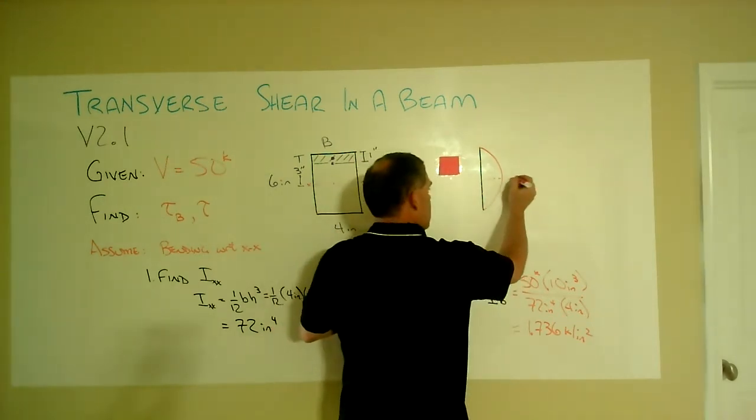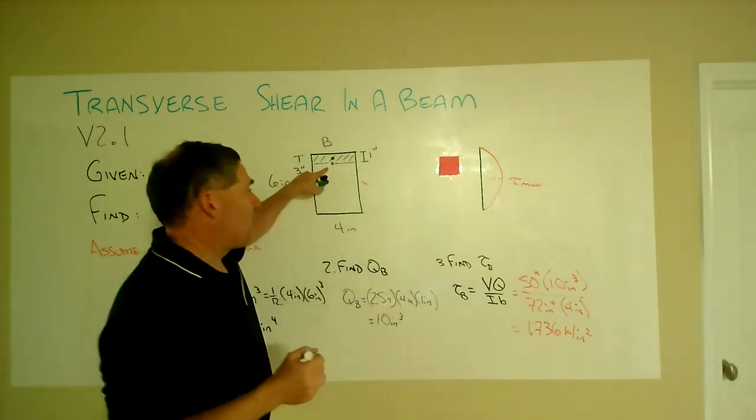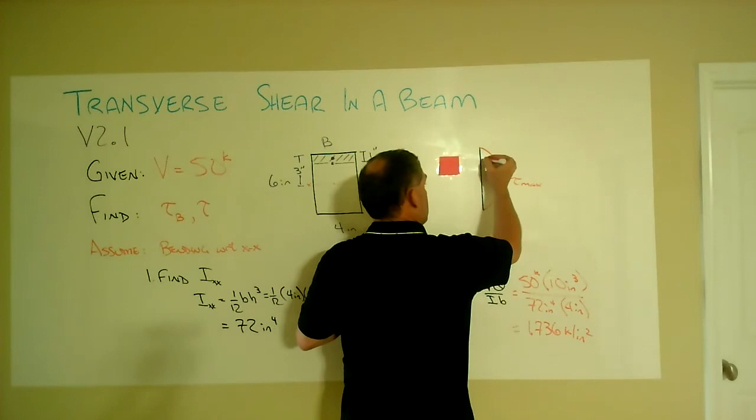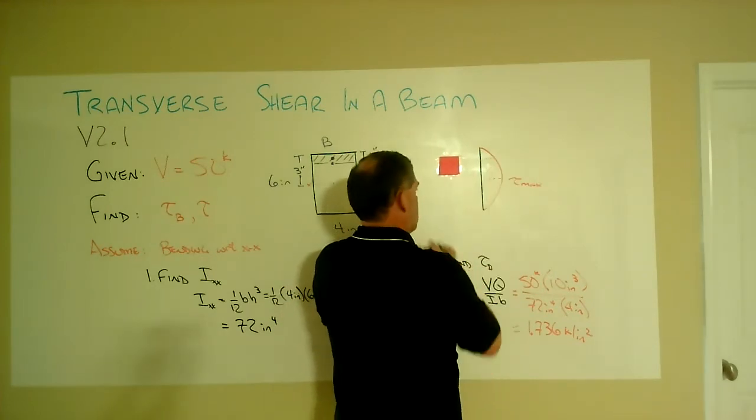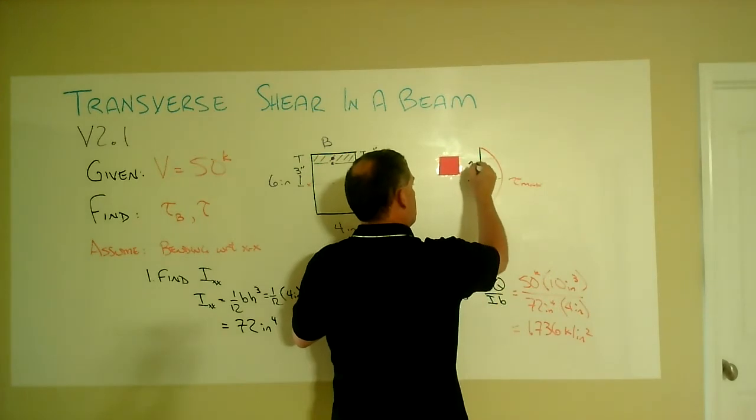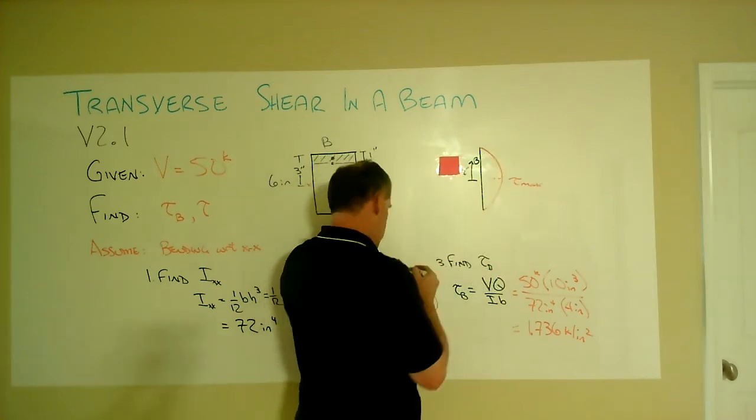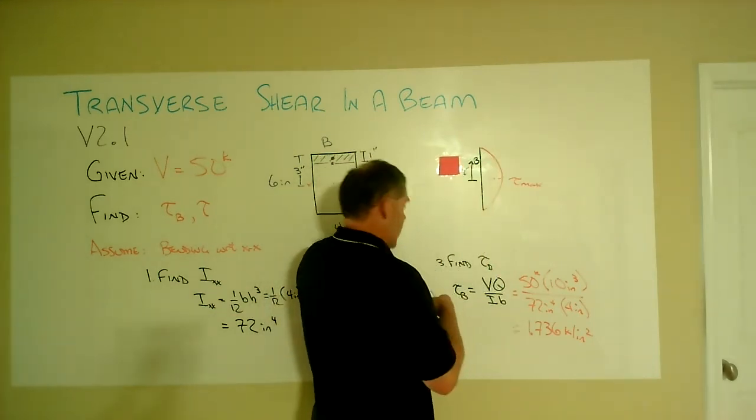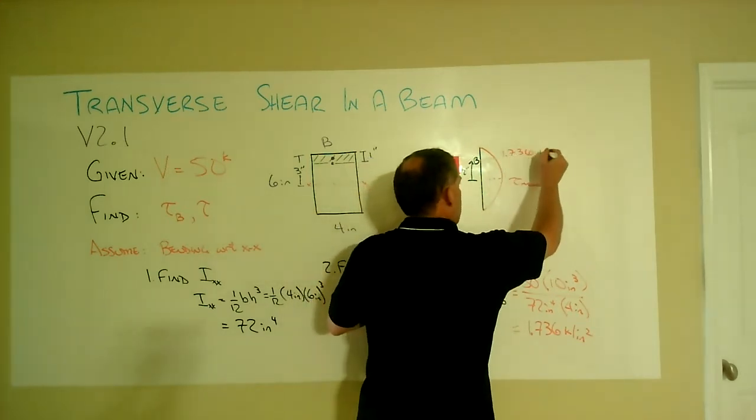And so that parabolic variation would look like that. Again, max at the mid height. We just found that at point B, which is two and a half inches up from the neutral axis here, that the stress value was 1.736 ksi.